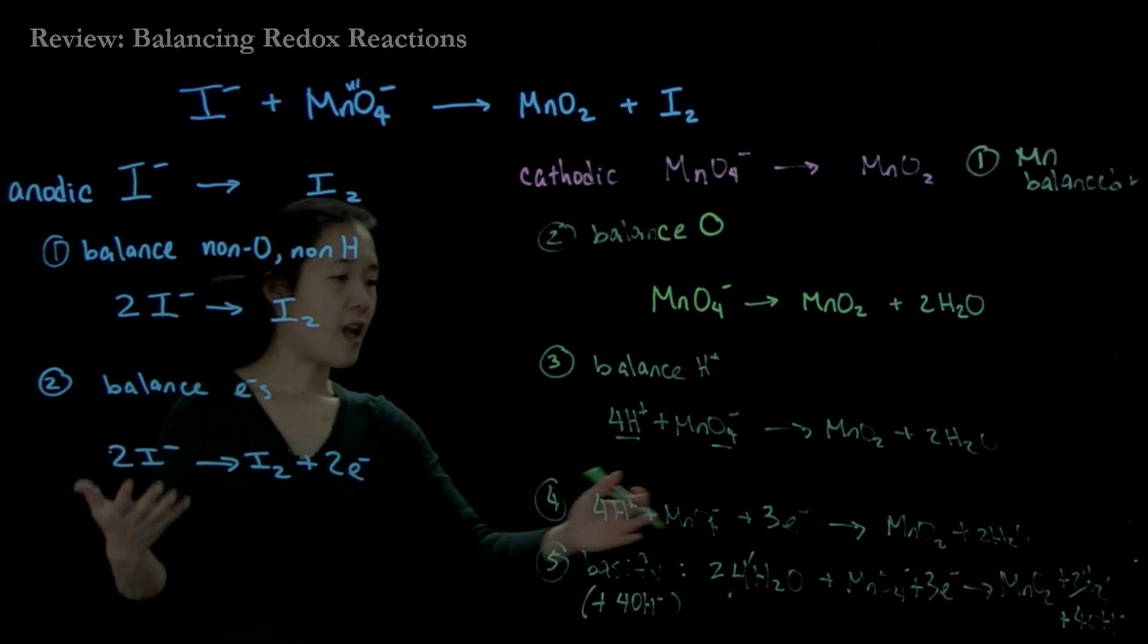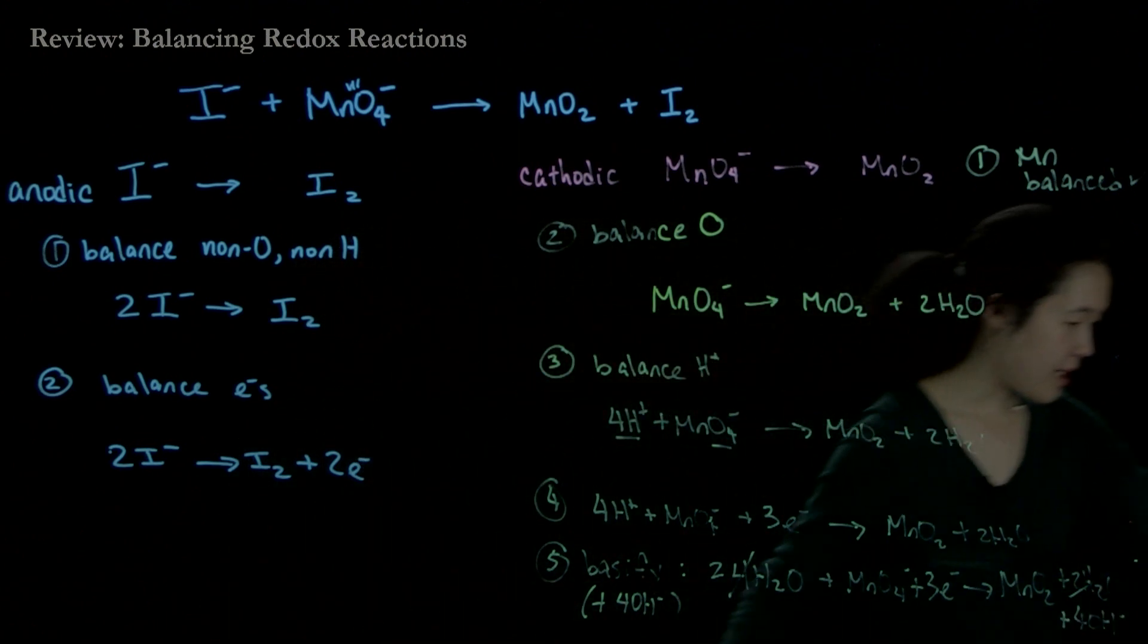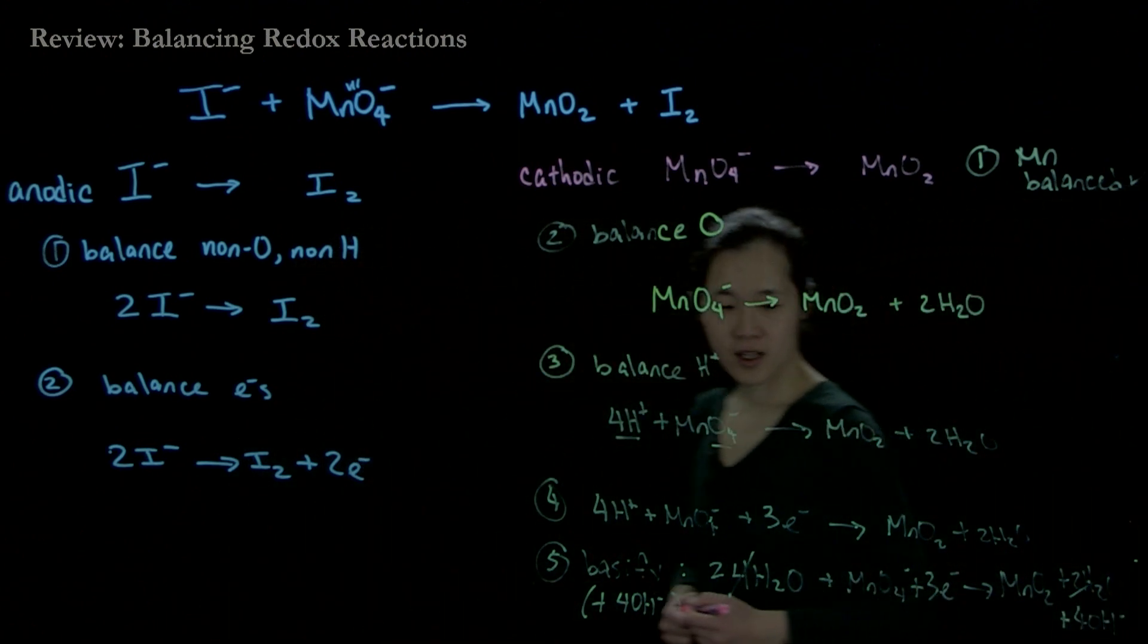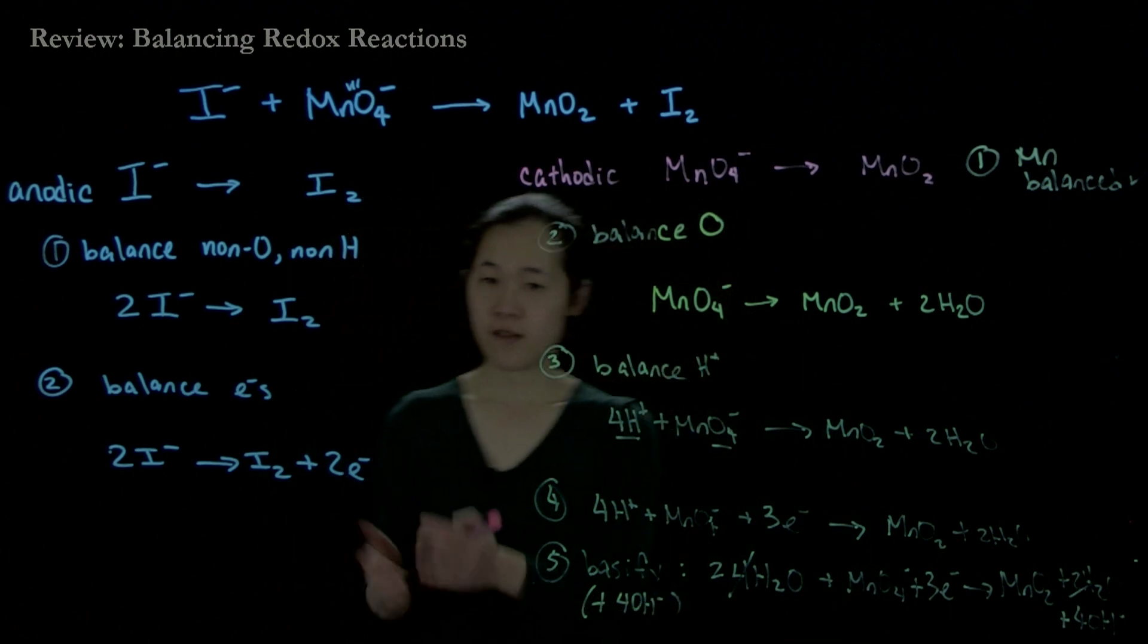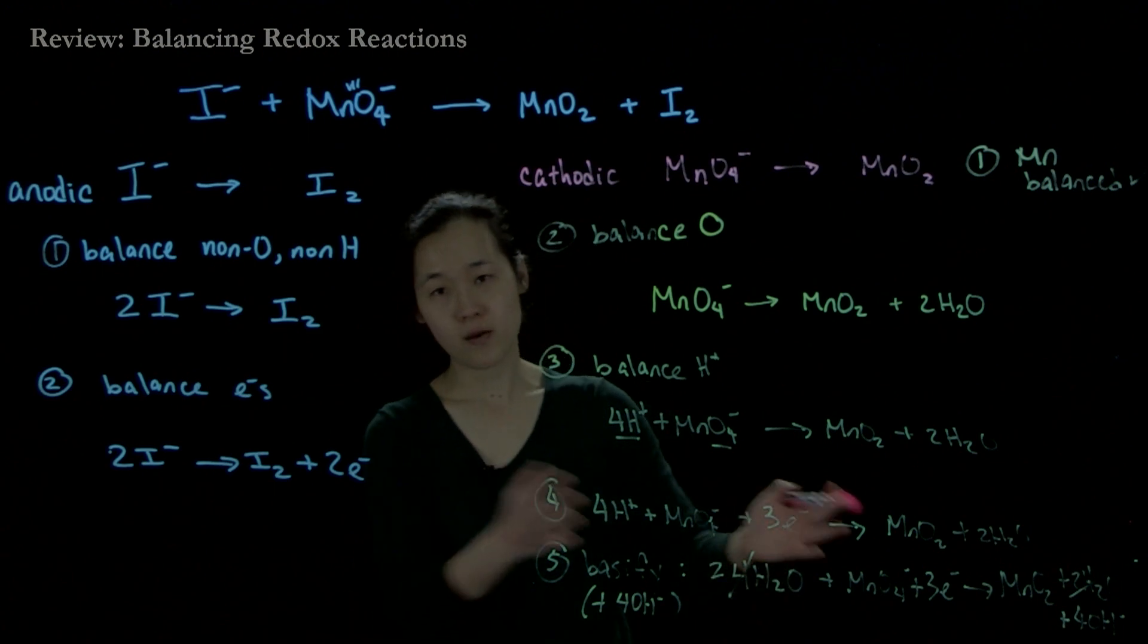Once we have these two half-reactions together, we can combine them. To combine these, we must balance the number of electrons. Over here we have two electrons, over here we have three. So we must multiply the iodide reaction by three and the permanganate reaction by two.